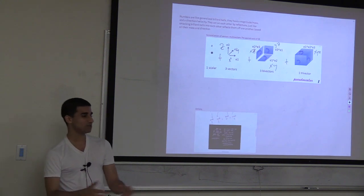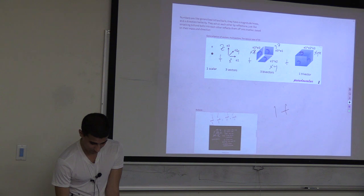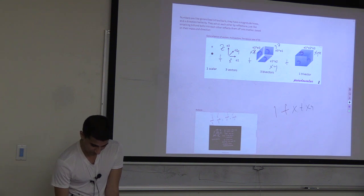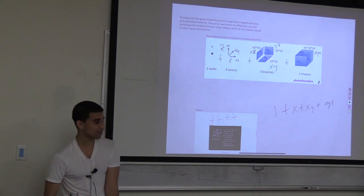So now we have objects: multi-vectors like 1 + x + xy + xyz, and so on. But what do we do with them?